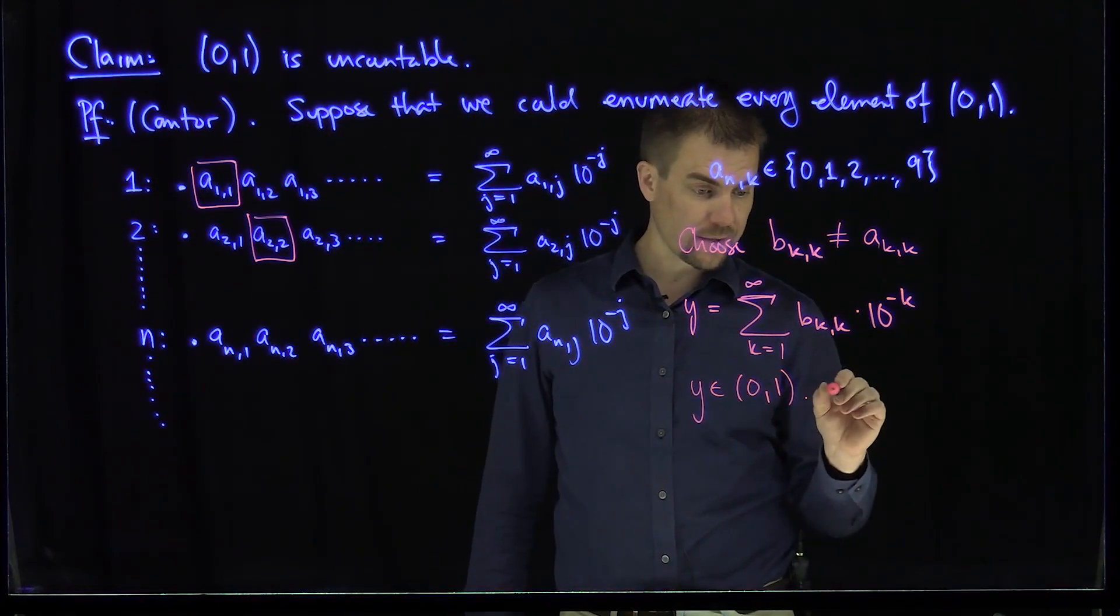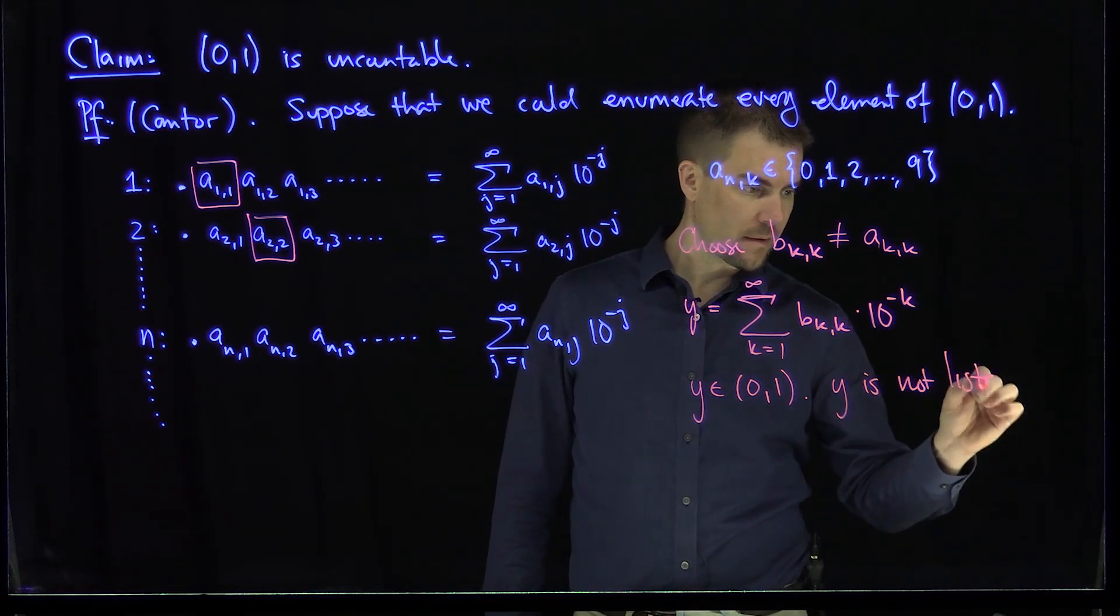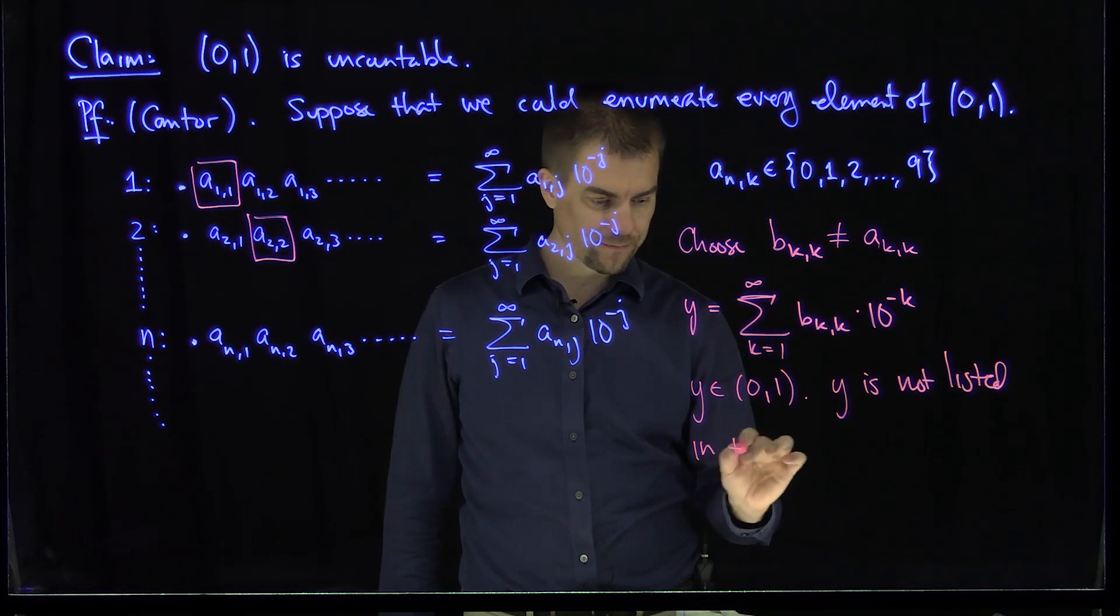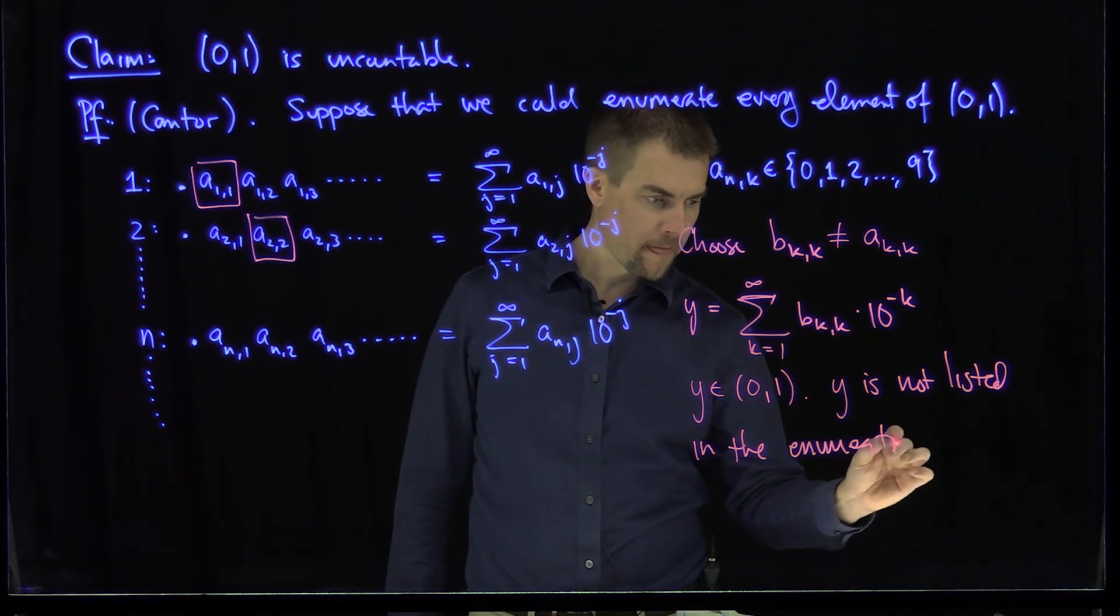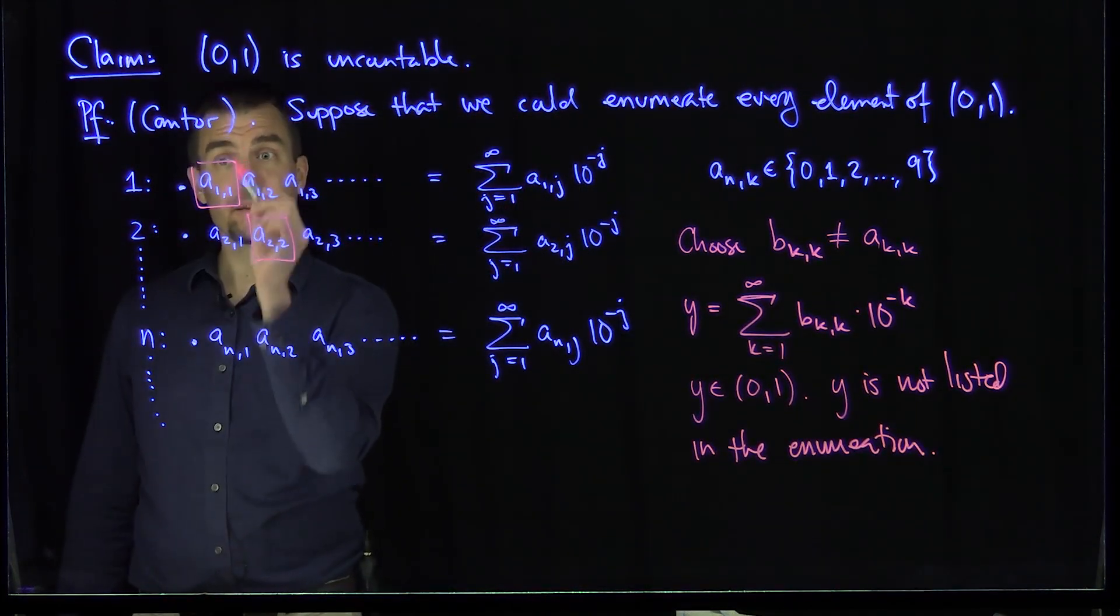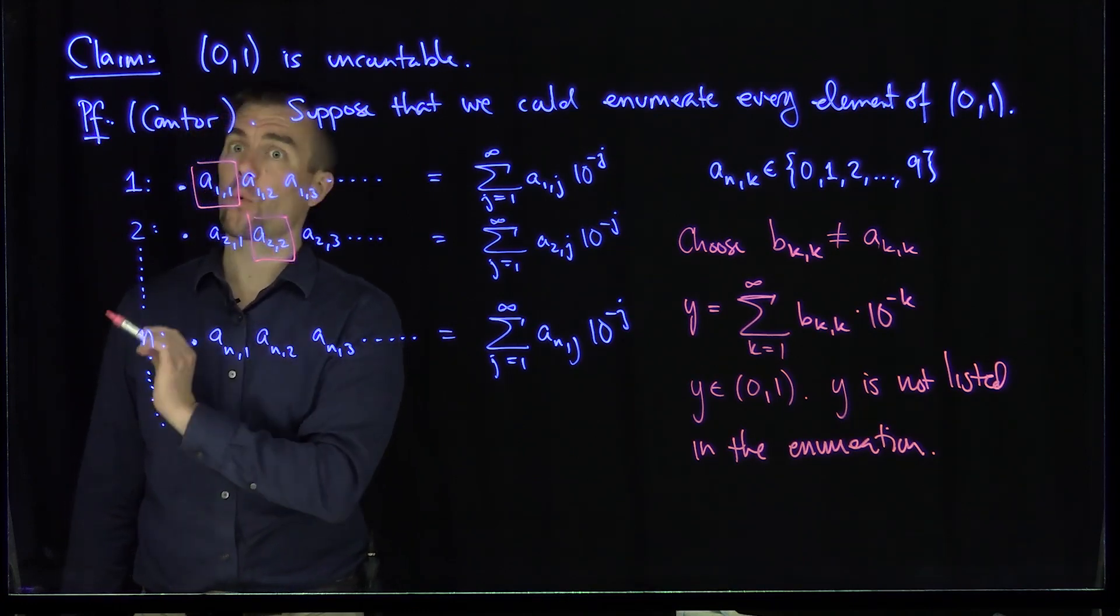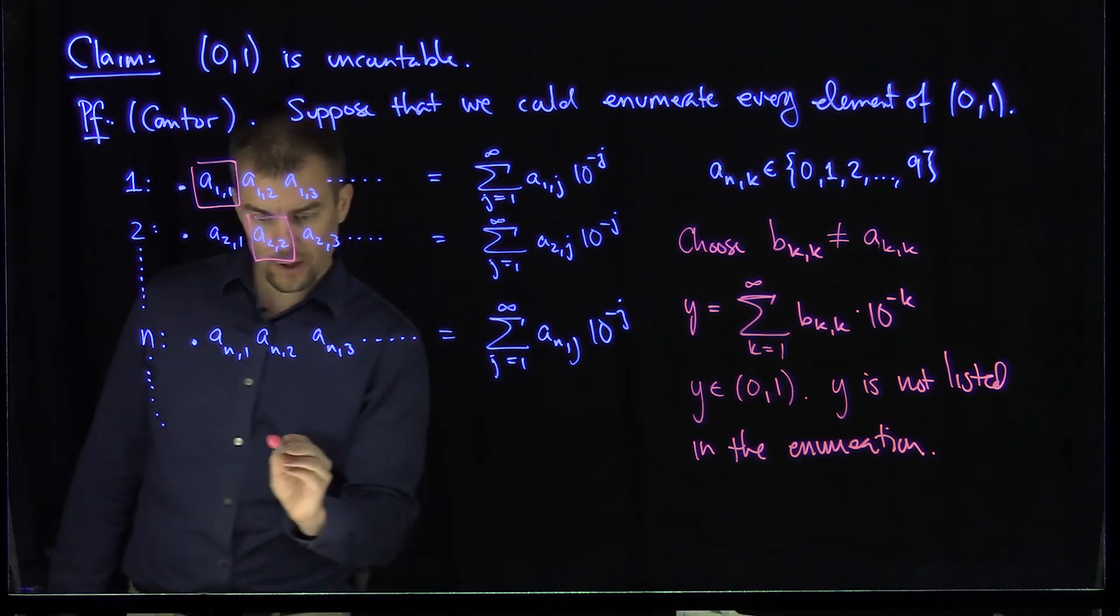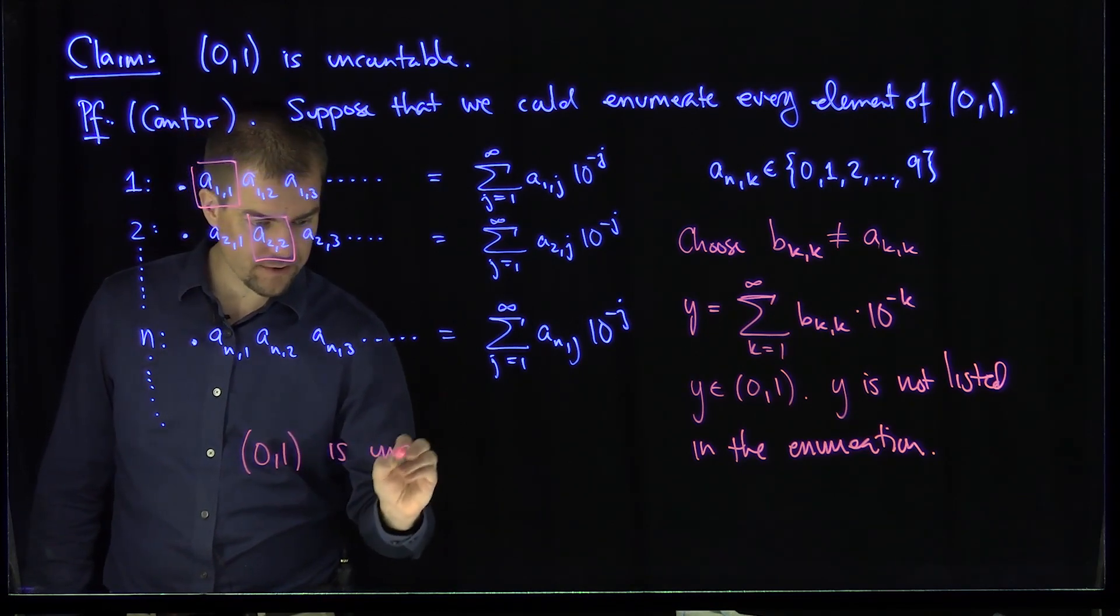y is not listed in the enumeration because y is different from every element in this list in at least one slot. Since y differs in at least one slot from every element, y cannot be in this list. Therefore, the conclusion is that 0, 1 is an uncountable set.